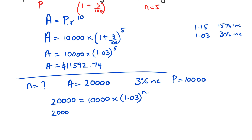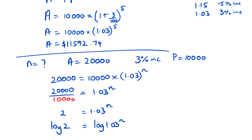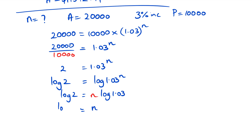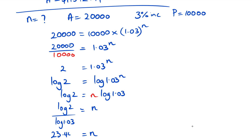First, divide both sides: 20,000 divided by 10,000 gives us 2 equals 1.03 to the power of n. At this point we take logs of both sides: log 2 equals log 1.03 to the power of n. Bring n to the front: log 2 equals n multiplied by log 1.03. Rearrange: n equals log 2 divided by log 1.03. That gives us approximately 23.44 years.